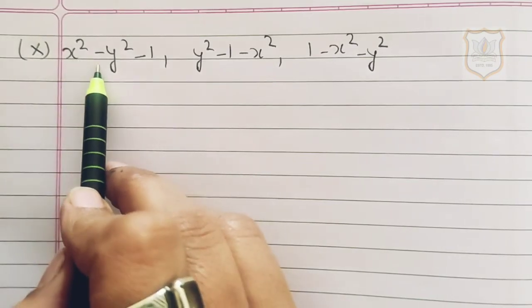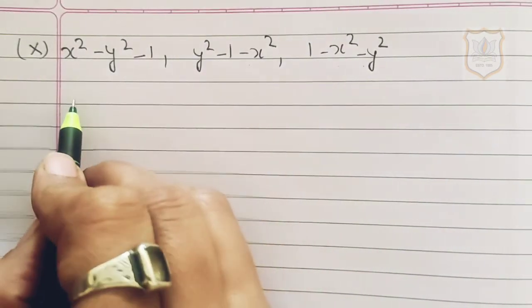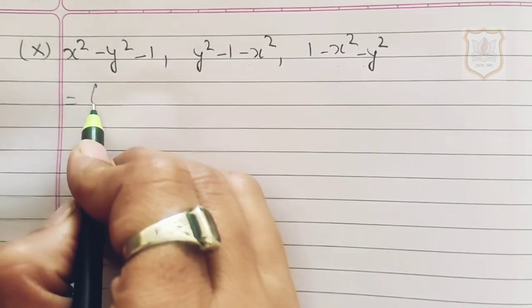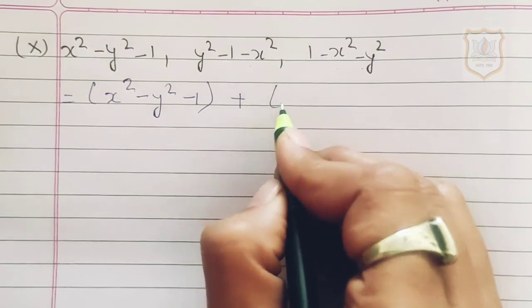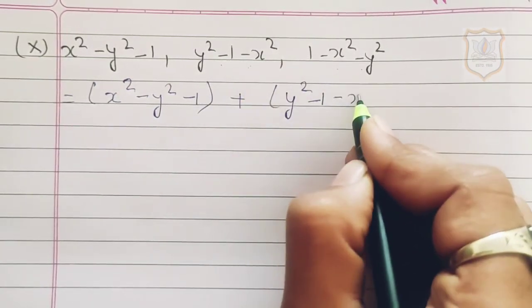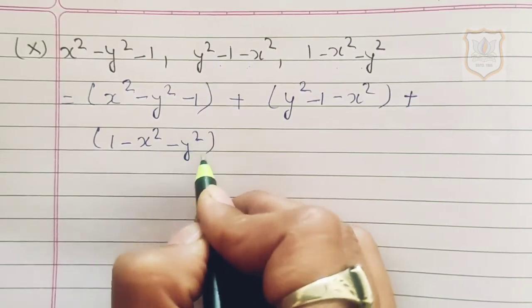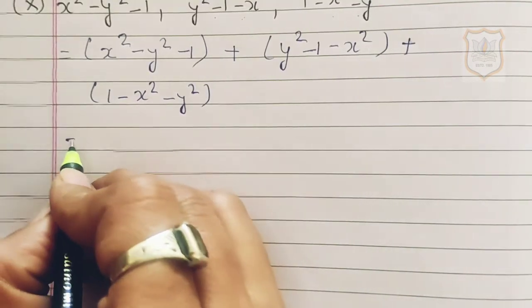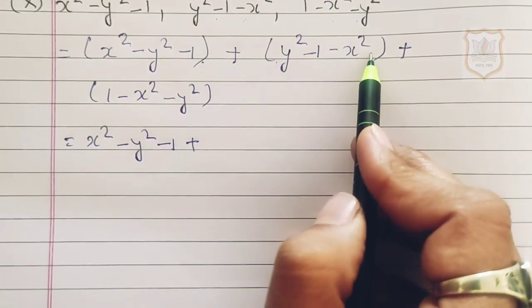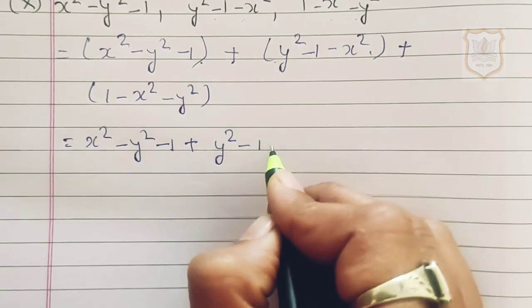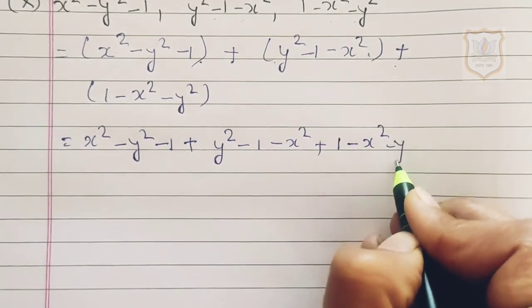The tenth part: x² minus y² minus 1, then y² minus 1 minus x², then 1 minus x² minus y². We place in brackets with plus signs: (x² minus y² minus 1) plus (y² minus 1 minus x²) plus (1 minus x² minus y²). Since all brackets have plus signs in front, we open them without changing any signs.